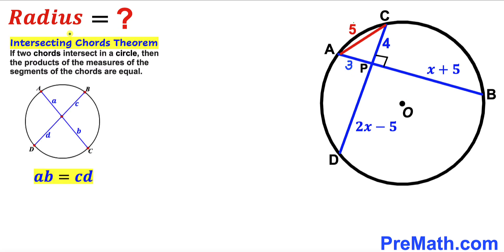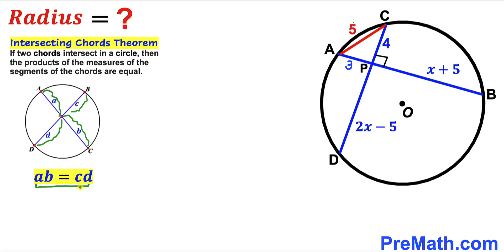Now let's recall the Intersecting Chords Theorem. According to this theorem, if two chords intersect in a circle, then the products of the measures of the segments of the chords are equal. As you can see in this diagram, chords AC and BD intersect such that segment A times segment B equals segment C times segment D.